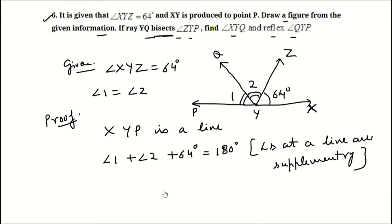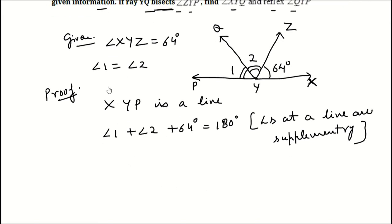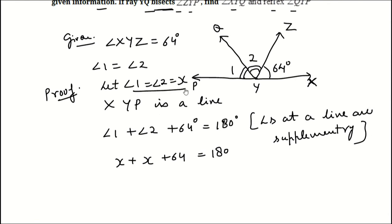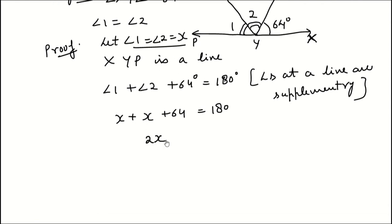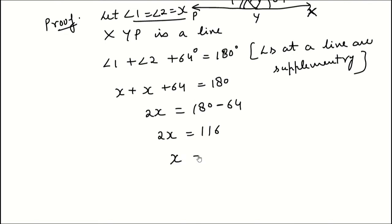Since angle 1 equals angle 2, let both equal x. Then x plus x plus 64 equals 180. That gives 2x equals 180 minus 64, so 2x equals 116. Therefore x equals 116 divided by 2, which gives x equals 58 degrees.